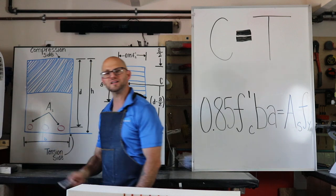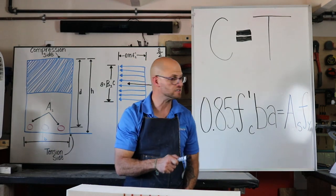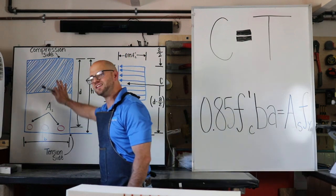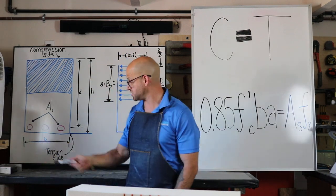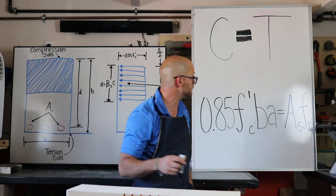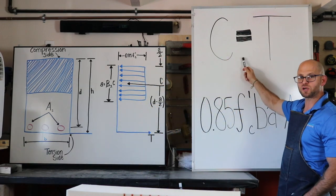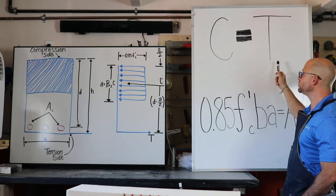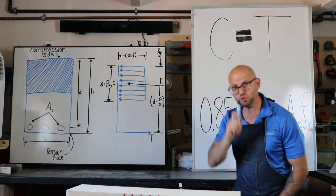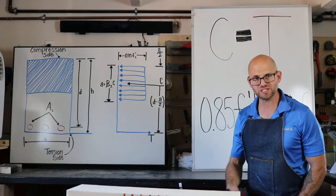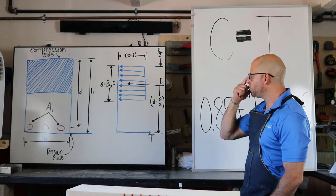The tension side is all based on the steel, and we call that T. So when we're designing this singly reinforced concrete beam, we've got to make sure our C, our compression, is equal to our tension. To do that, we need to identify the forces—the amount of energy that's in our compression side—and balance it with our tension side.